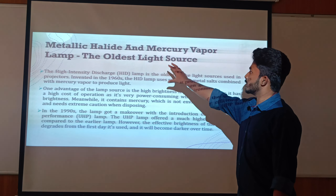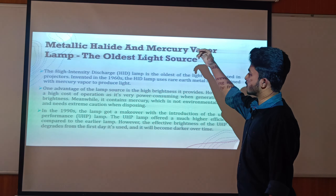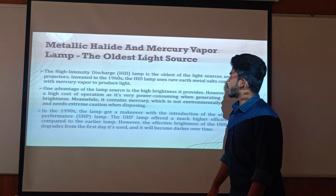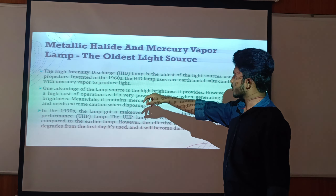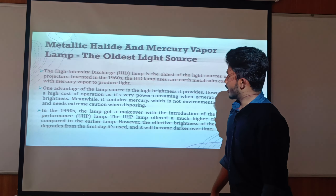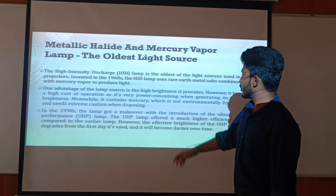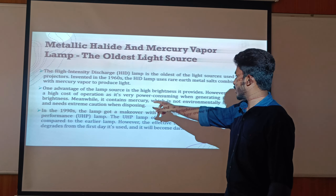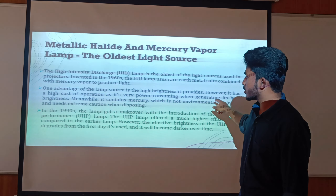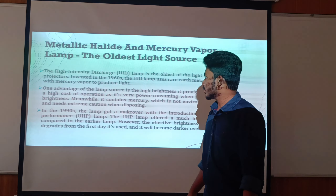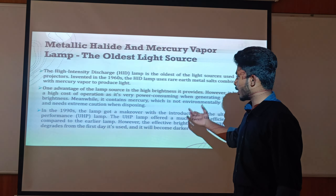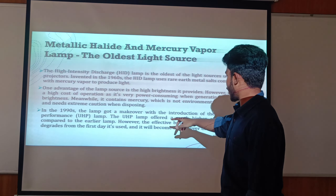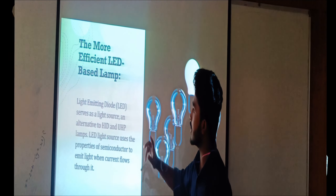This is the first light source, the oldest one, known as the Mercury Vapour Lamp. It was the oldest light source used in projectors in the 1960s. Its advantage was high brightness, but its major disadvantage was very high power consumption. In the 1990s, this lamp underwent a makeover.